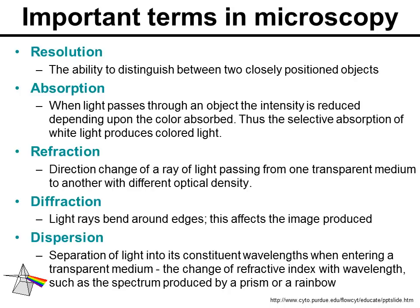Some important terms about microscopy. First, resolution — it is the ability of the microscope to distinguish between two closely positioned objects. Imagine having two very small spheres next to one another. Is that microscope able to tell you that they are two independent objects, or do you see them as one object?